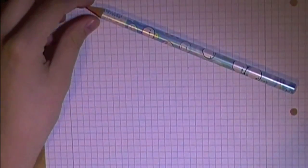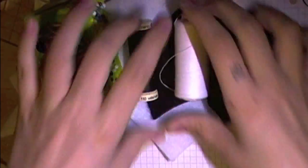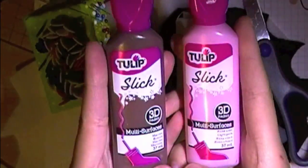The supplies that you're going to need will be grid paper, pencil and a ruler, then you're going to need some white and black felt and sewing supplies and some 3D paint for decorations.